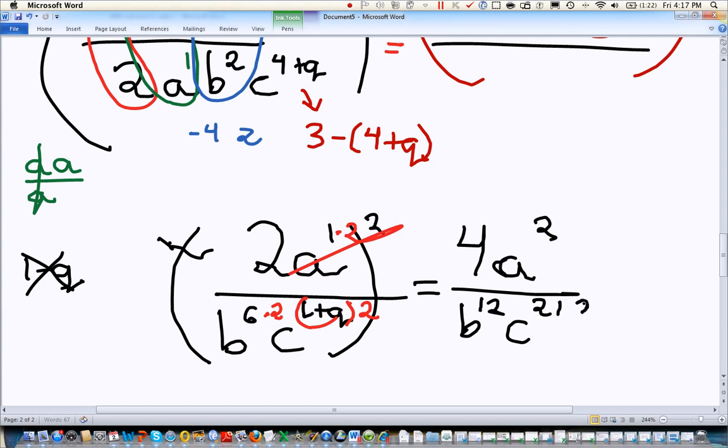And that's actually as simple as your giant fraction is going to get. We have everything dealt with that we can have dealt with. So we're going to leave it just like that. So just please be really careful with your negative signs. And please be really careful with all your exponent rules. And take it step by step.